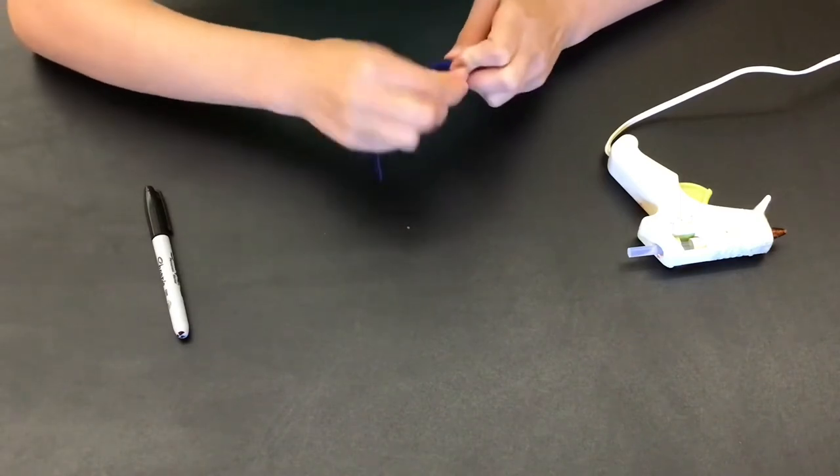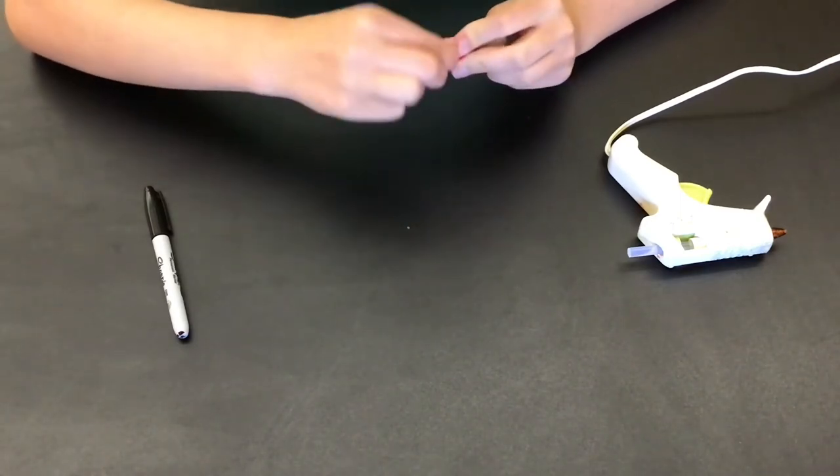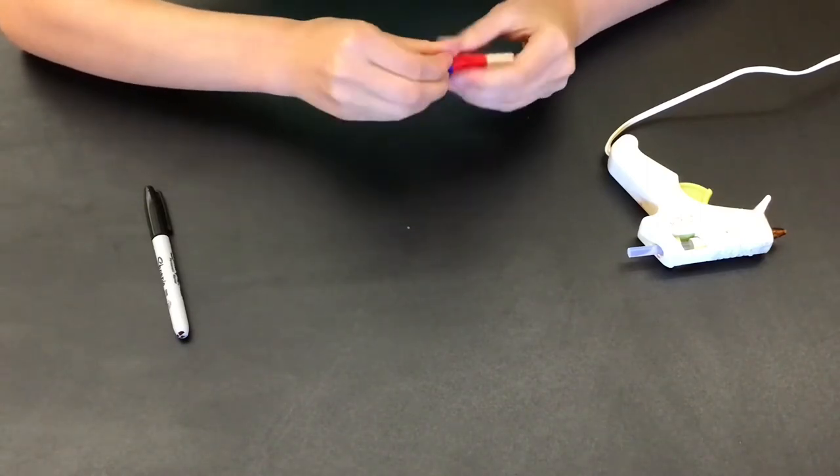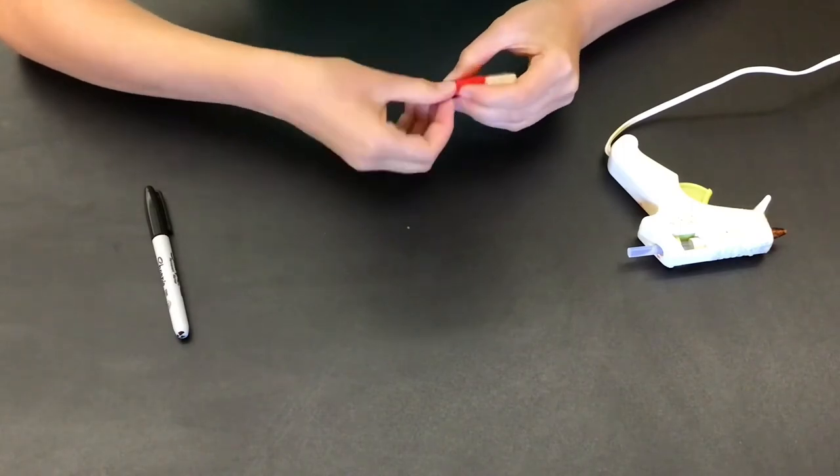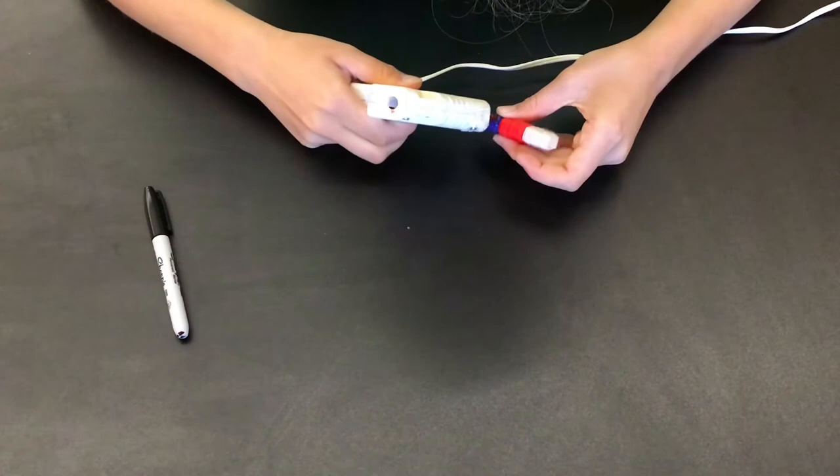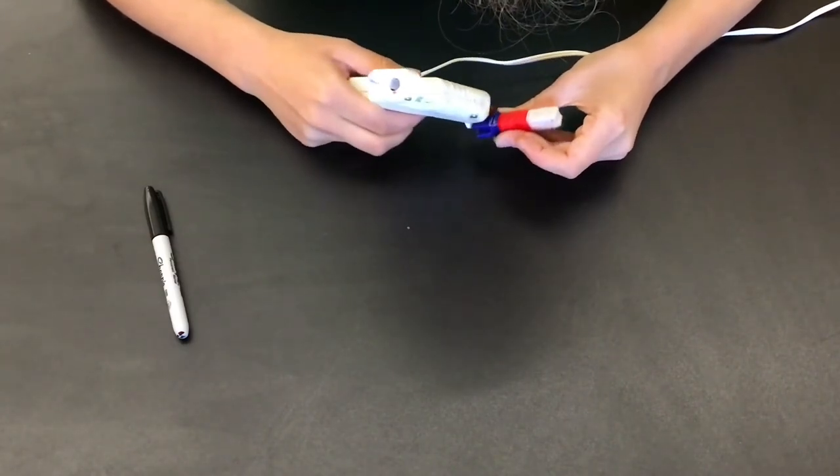So you're just going to keep wrapping your string around and around. You might want to build up the top section like you see me doing here, but you're just going to keep wrapping it around until you get to the end of it. And when you get to the end of it, you're going to take it, get it to a nicer spot to glue, like a flat side, and then just stick some hot glue on there or your Elmer's glue, whatever glue you're using.